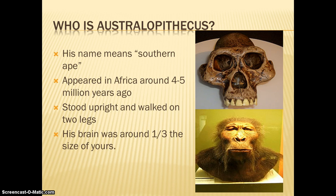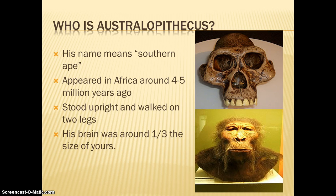Who is Australopithecus? Australopithecus. His name means southern ape. This was a hominid that appeared in Africa maybe four or five million years ago. They stood upright and walked on two legs — they might not have stood completely upright, but they were bipeds, meaning they walked on two legs. This hominid's brain was pretty tiny; it was a third of the size of yours. So just imagine if you had a brain one third the size of your brain is now — you wouldn't be able to do too much. And that was the issue that Australopithecus had.